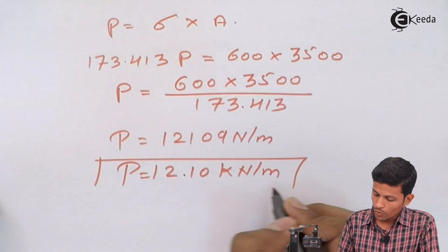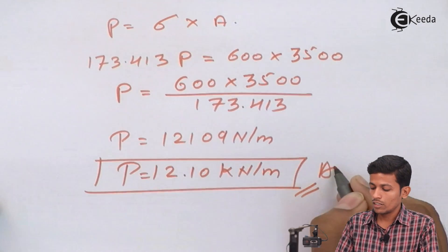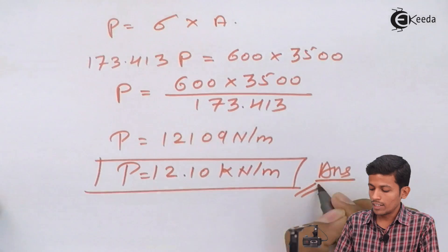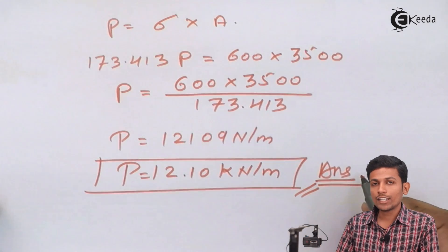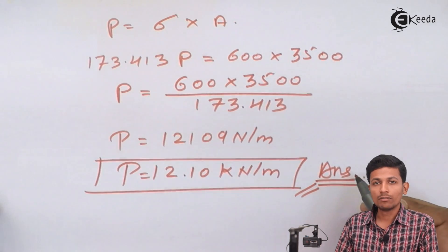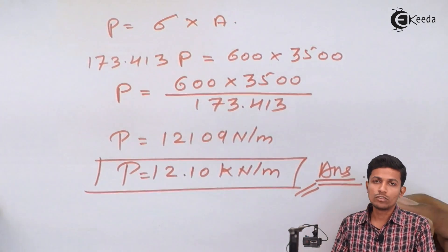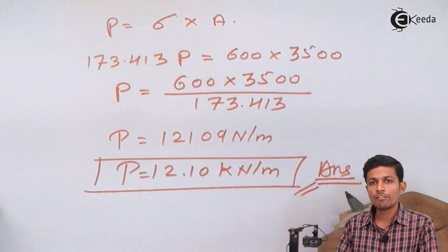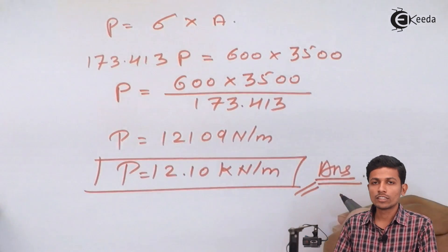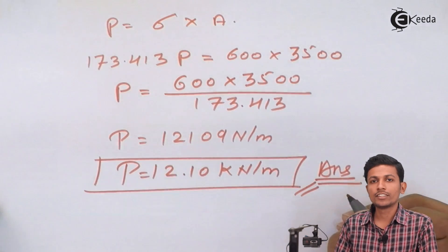We have found the value of UDL, P = 12.10 kN/m. This is our final answer. Thanks for watching my video. Subscribe to the channel.